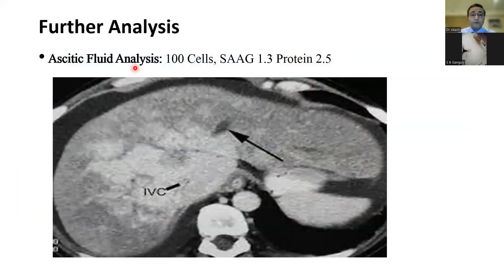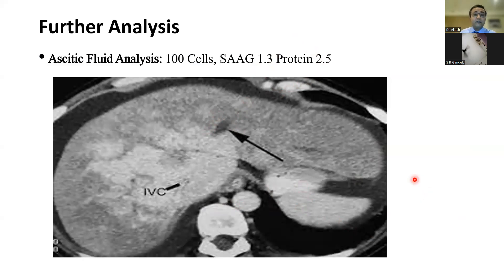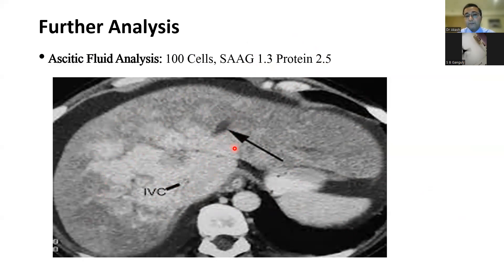Your diagnostic workup does not stop there because you have seen non-visualized hepatic veins. Ascitic fluid analysis: 100 cells, SAAG of 1.3, consistent with portal hypertension for SAAG ≥1.1. But protein is 2.5, touching the upper limit. Suspecting this, you go on to do a CT, which shows an extremely heterogeneous, variegated, differently perfused liver. You see the IVC — which should have been black — and there's a thrombus in the IVC. Hepatic veins cannot be visualized, and a partial thrombus is seen in the left hepatic vein. Again, this patient was labeled as cirrhosis.